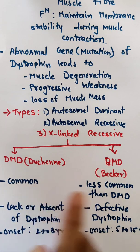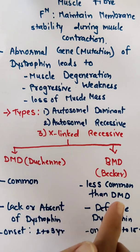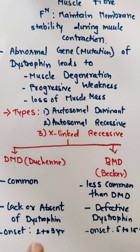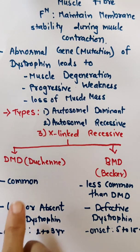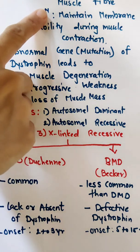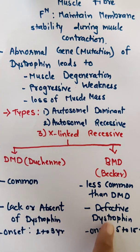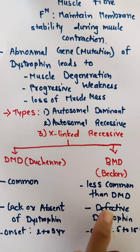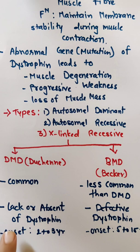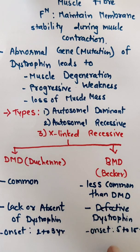DMD is more common than BMD. In DMD, the dystrophin protein is absent, whereas in BMD there is a defective dystrophin present. The onset of DMD is at 2 to 3 years of age, while the onset of BMD is between 5 to 15 years of age.